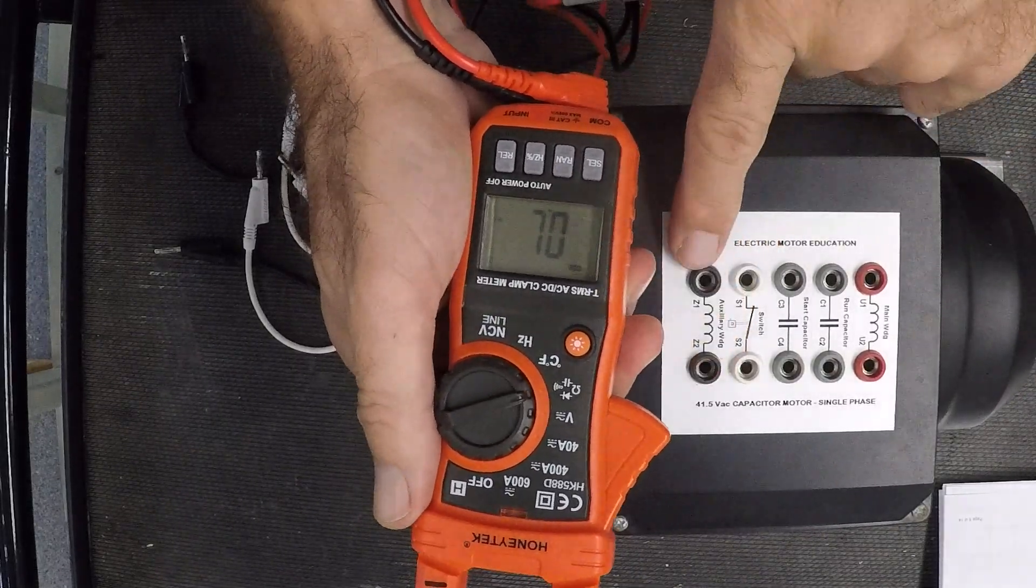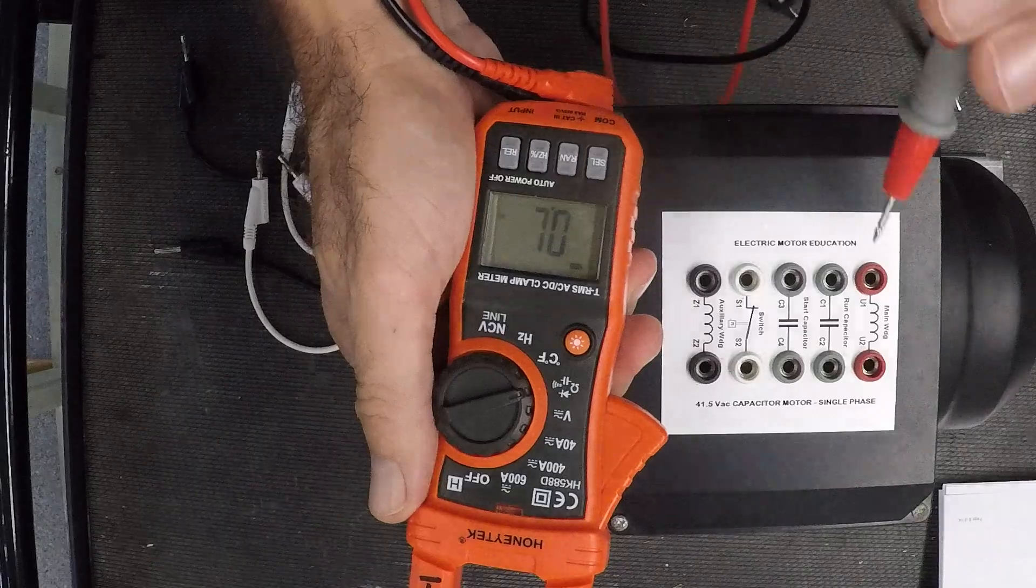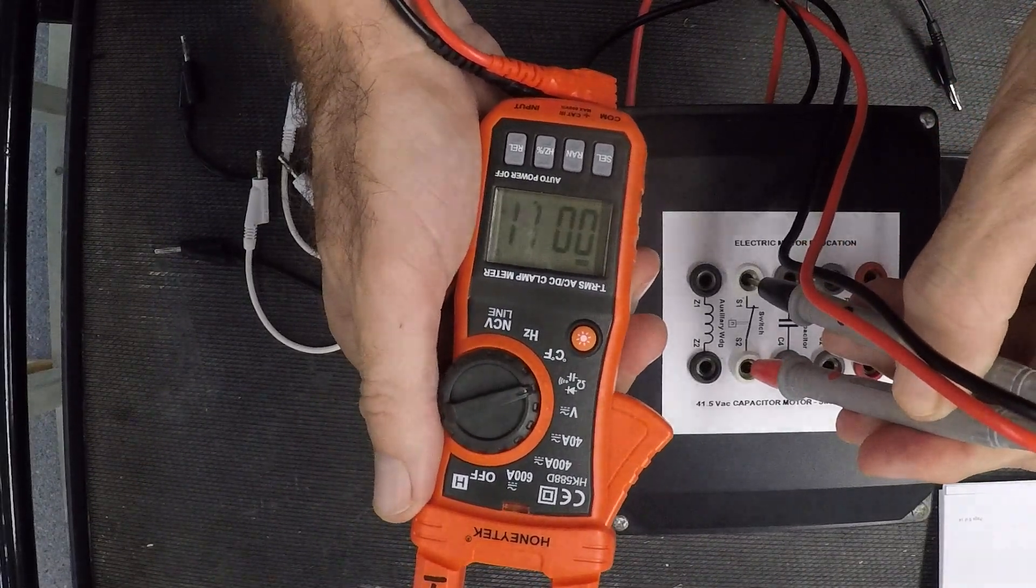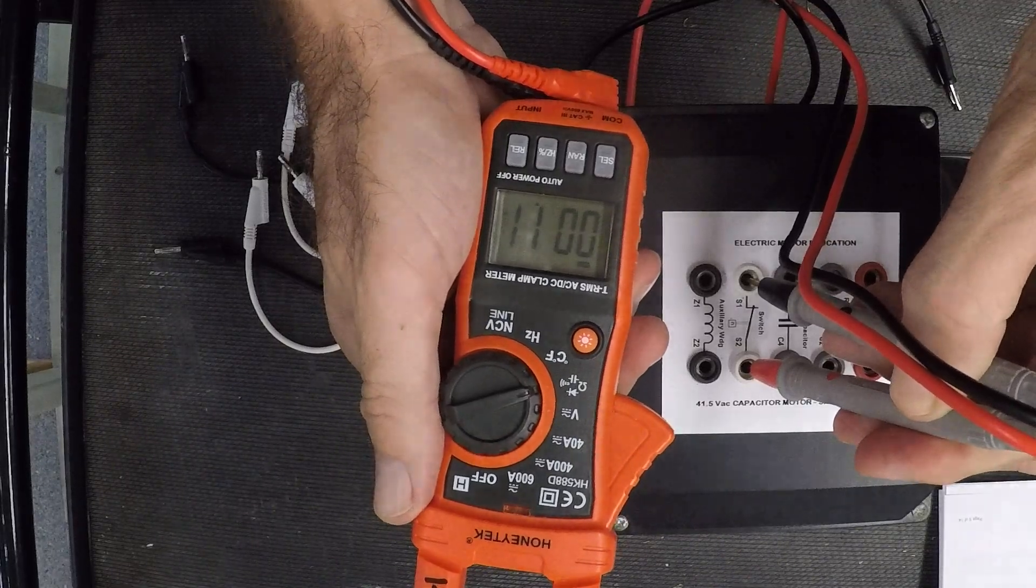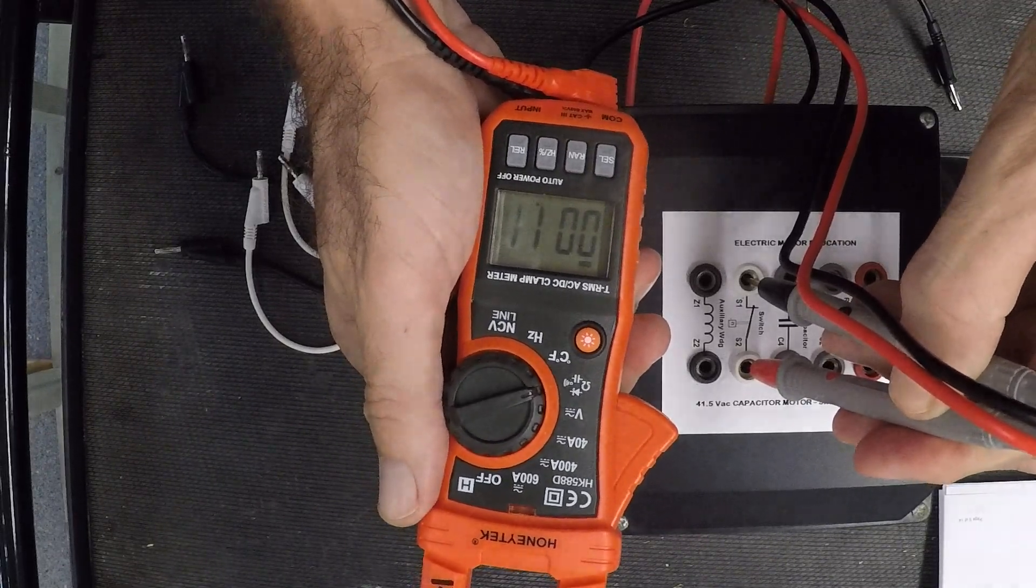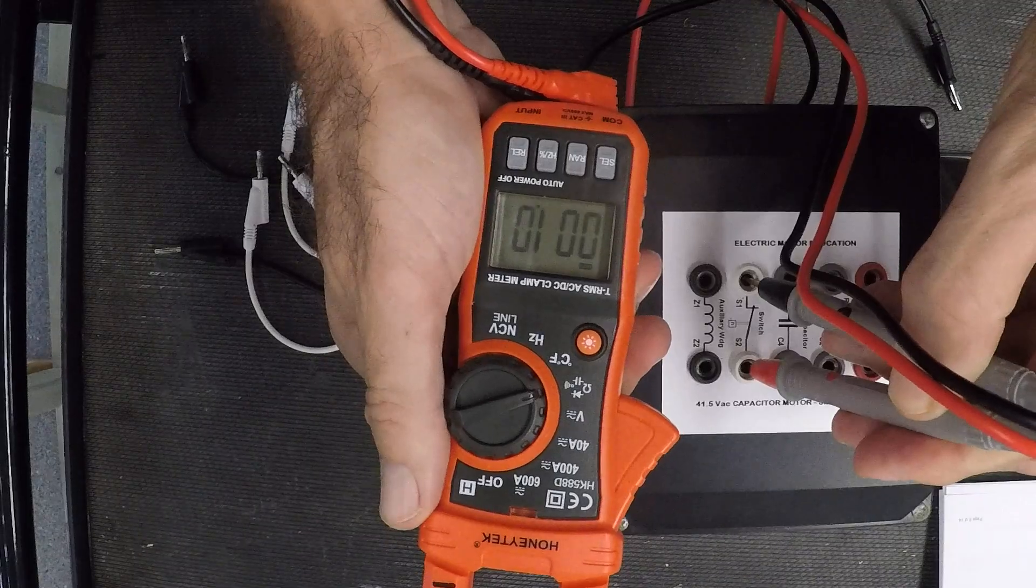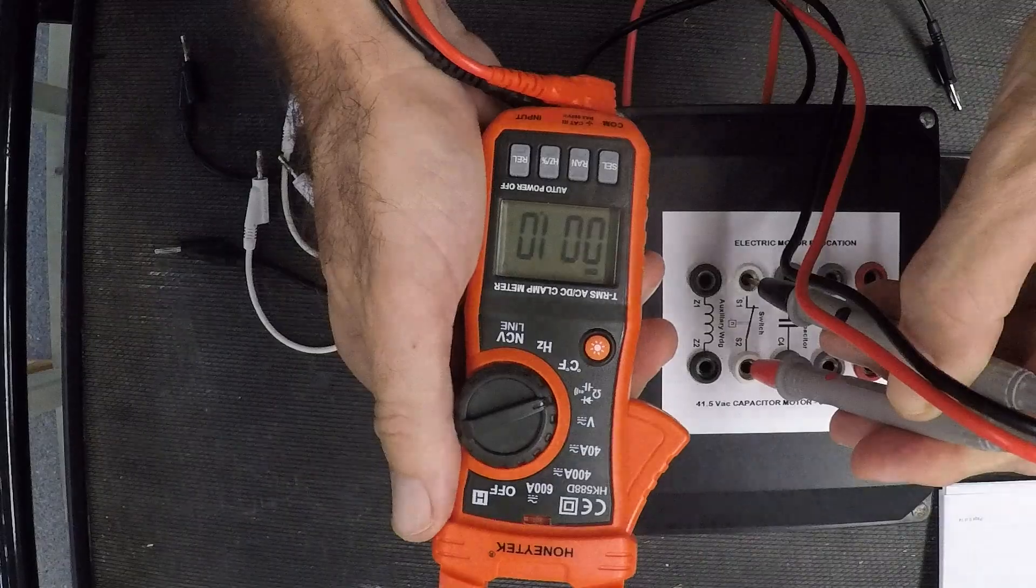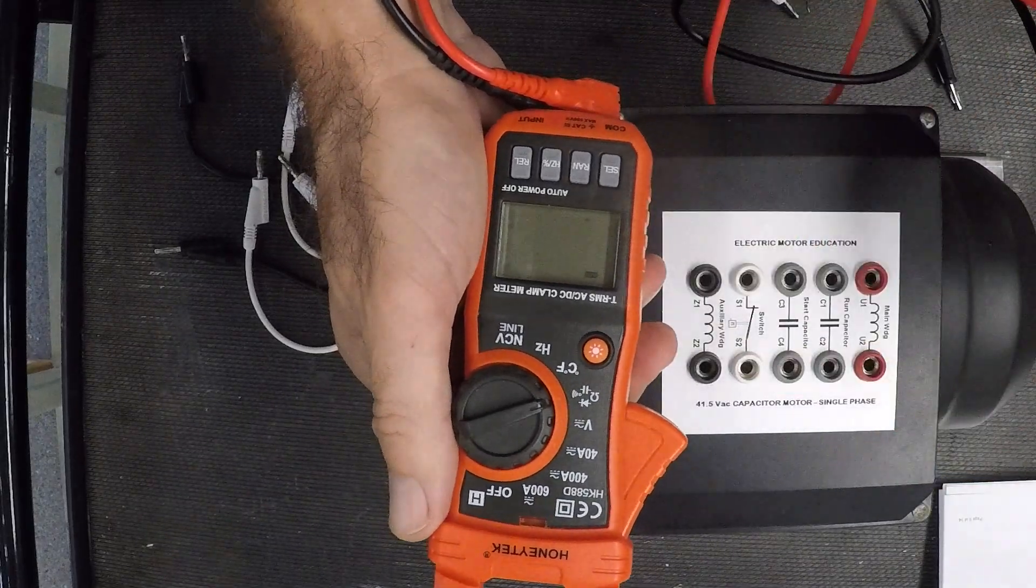I want to look at my centrifugal switch. I'm getting 1.1 ohms. Sometimes it can be high because it's a contact and builds up a little bit of oxidation sometimes. Just have a look and see if they're all good.